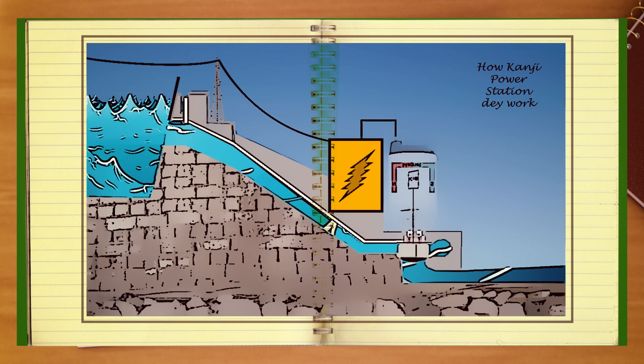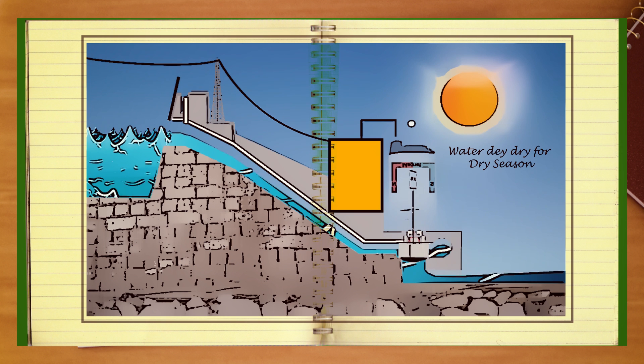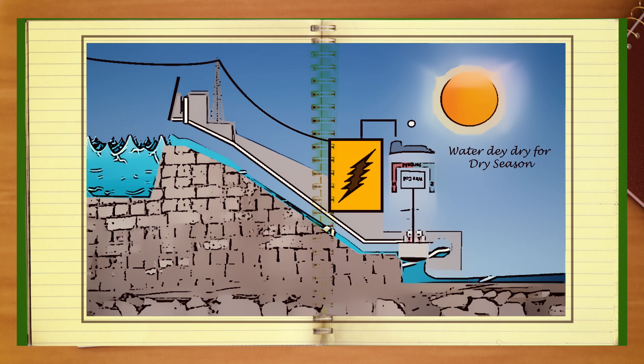That's why in rainy season when rain falls plenty, lights are plenty. But in dry season, lights are not plenty because the water is not plenty.